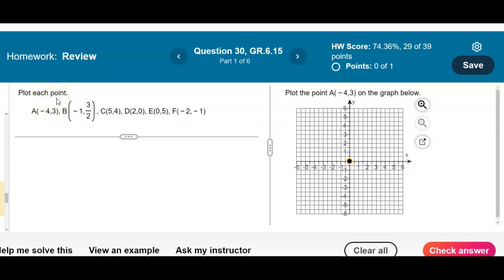So in this example we want to plot each point. And so the first point we have is A. We want to plot negative 4 and then 3. Now the first part of the ordered pair is the direction on the x-axis. So you go left if it's negative, you go right if it's positive.